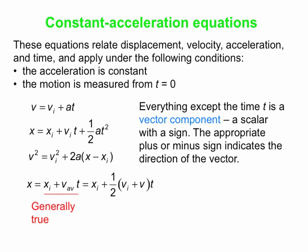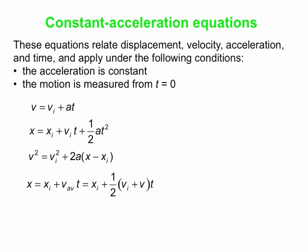In the fourth equation, part of it is generally true even when the acceleration is not constant, while the other form applies specifically to the constant acceleration situation. Where do these equations come from? The first one comes from the definition of acceleration: acceleration is delta v over delta t. Here t stands in place of delta t because our initial time is zero, and v minus v_i is delta v — v represents the final speed and v_i is the initial speed. Rearranging gives you the first equation.